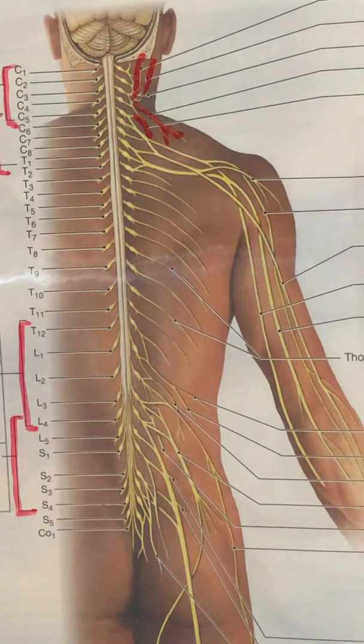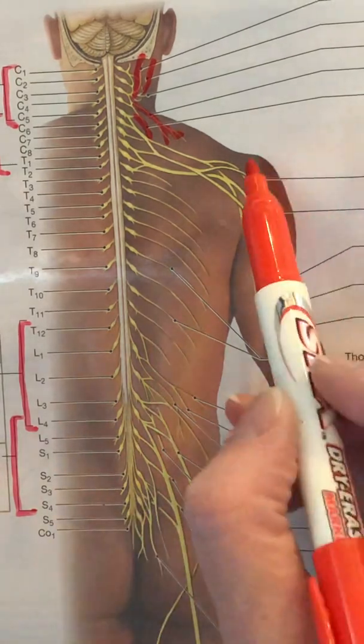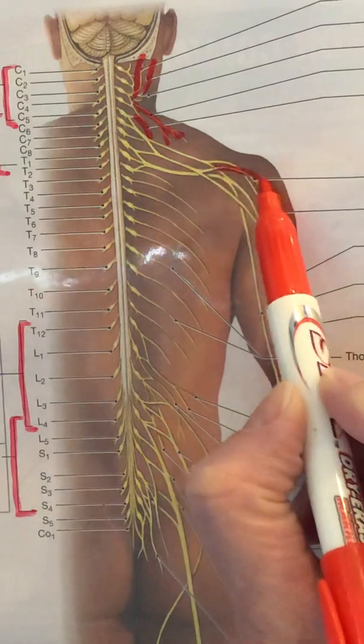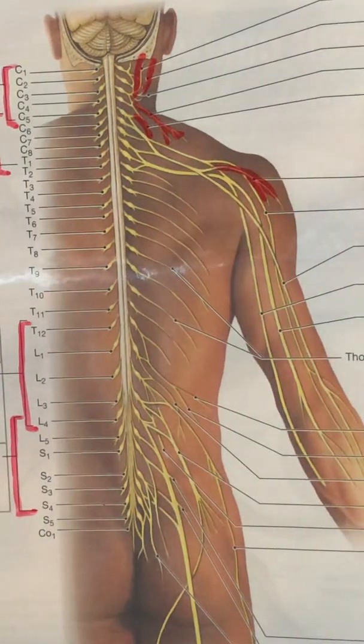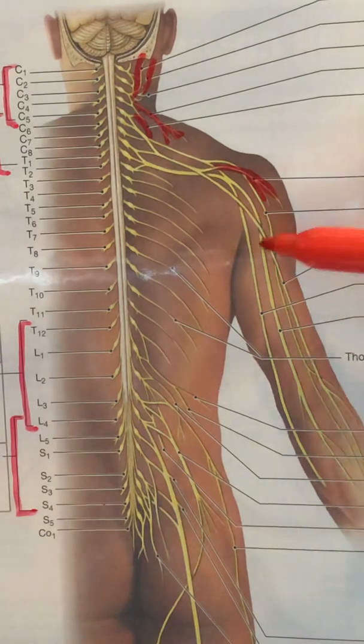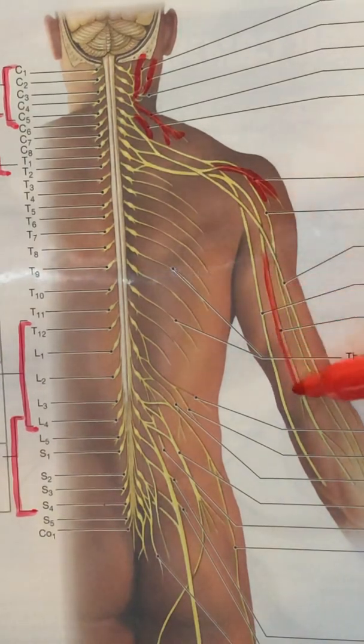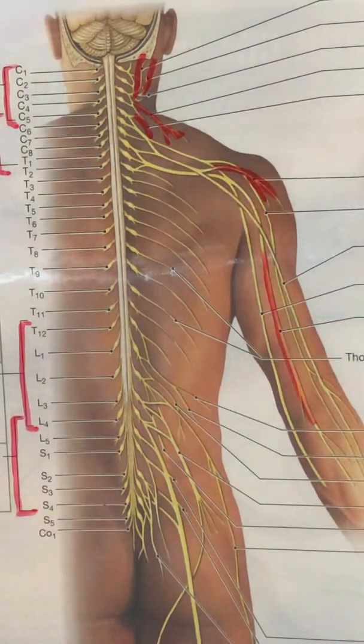Then we move into the axillary, so axillary is this one right here, kind of branches a little bit. Then we have the median nerve, is this large one that goes right kind of in the middle of your arm so that's kind of nice, median.